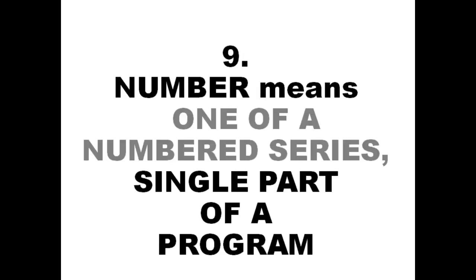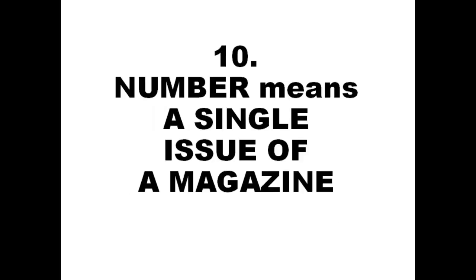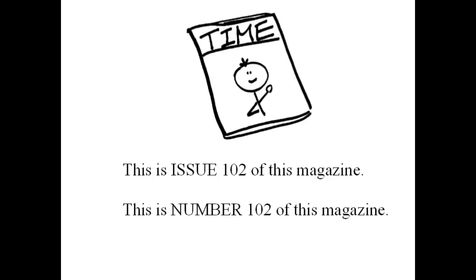Number means one of a numbered series, a single part of a program. The program consisted of four musical parts of the program — the program consisted of four musical numbers. Number means a single issue of a magazine: this is issue 102 of this magazine — this is number 102 of this magazine.